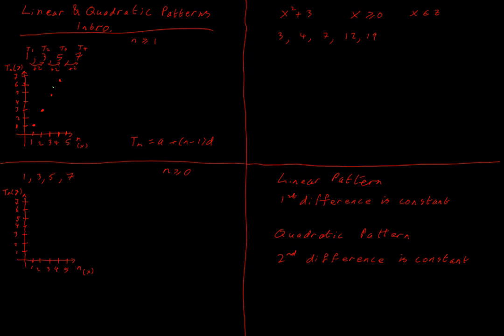So this is a linear pattern because it produces a straight line. Now, if I wanted to know an equation for this pattern so I could find any term — say, the hundredth term — I want a formula. I know from junior cycle I could use the formula: Tn equals a plus (n minus 1) multiplied by d. This is in your log tables and we'll use it in more detail later.